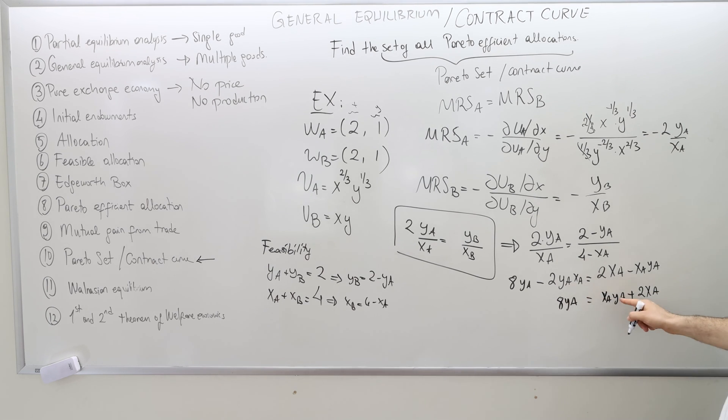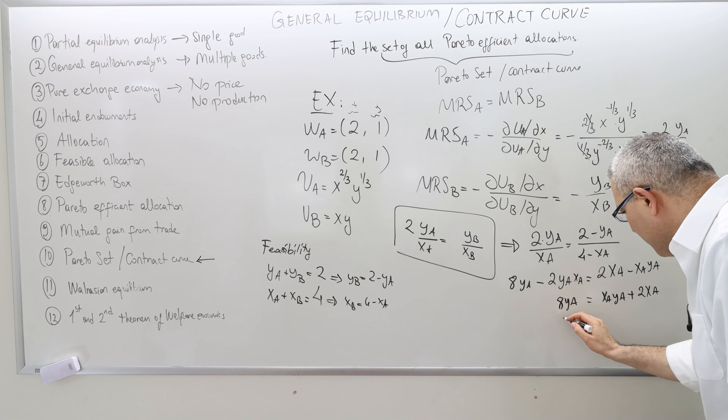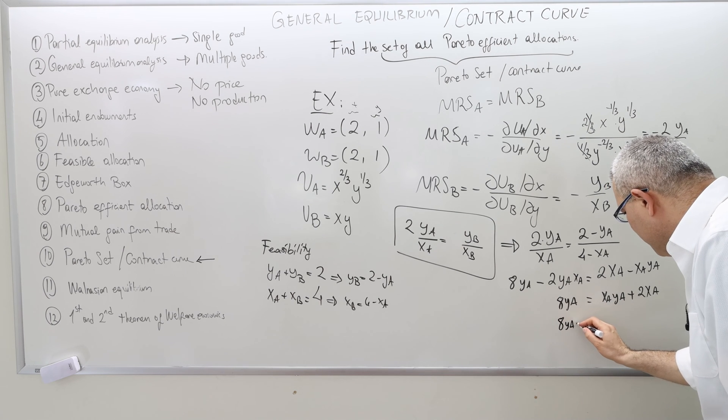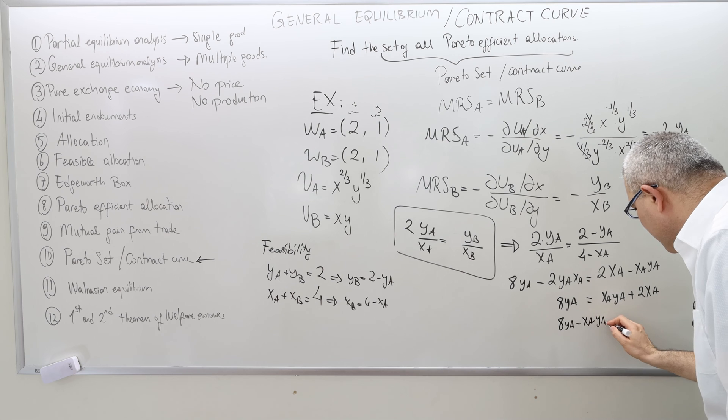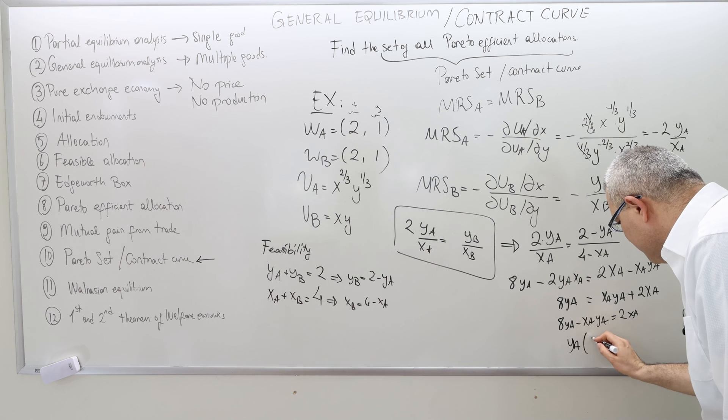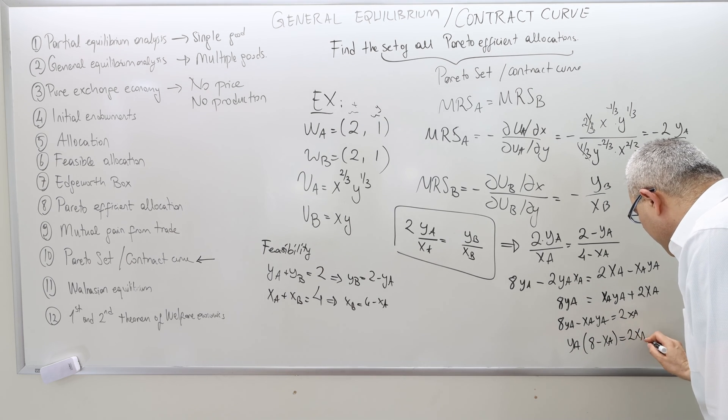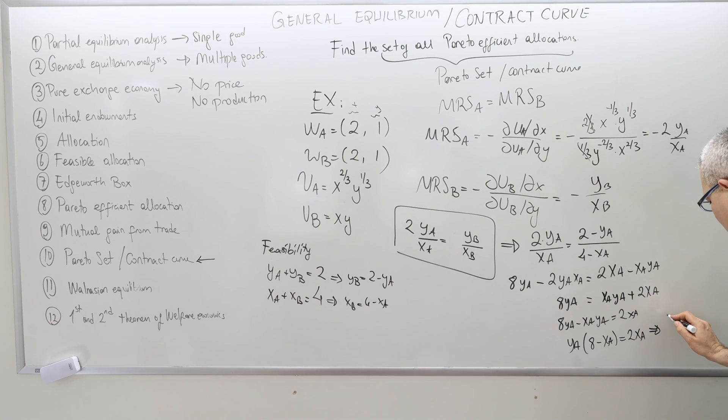These are not going to cancel out. This is minus 2, this is minus 1. So I'm going to send this guy to the other side, so it's going to be plus x_A y_A plus 2 x_A equals to 8 y_A. So leave y alone. Also bring this if you like. So 8 y_A minus x_A y_A equals 2 x_A. Take into y_A parentheses: 8 minus x_A equal to 2 x_A.